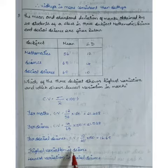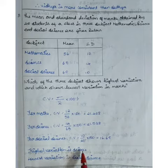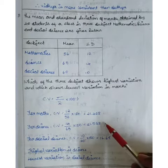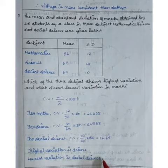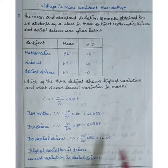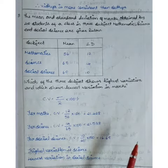Therefore, the highest variation is in science with 21.53, and the lowest variation is in social science with 16.67. That's all.